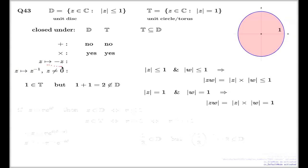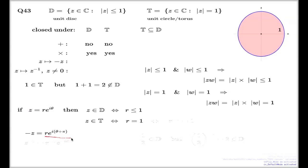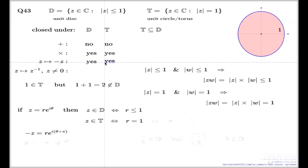What about taking the negative? Yes, it is yes. You can argue this by noting the absolute value of the negative of a complex number is the same as the absolute value of the complex number itself. Alternatively, if you have a complex number in exponential form, the negative of that number will have the same form with pi added to the argument — meaning the modulus R is unchanged. So we have the answer yes for both D and T.